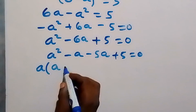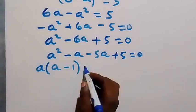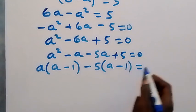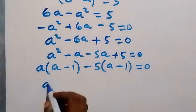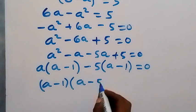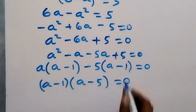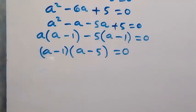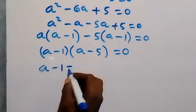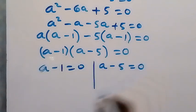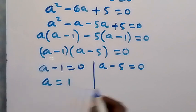Factorizing gives us (a minus 1)(a minus 5) equals 0. Since either factor can be zero, we have two cases: a minus 1 equals 0, giving a equals 1, or a minus 5 equals 0, giving a equals 5.